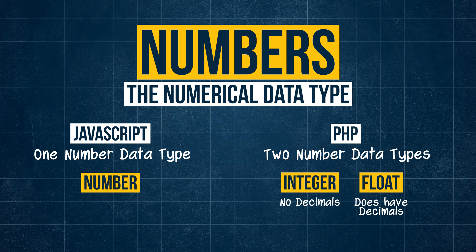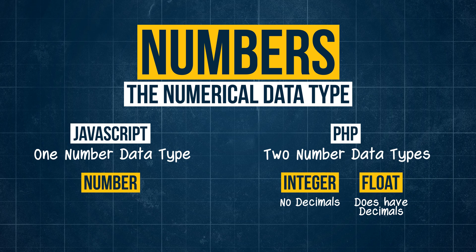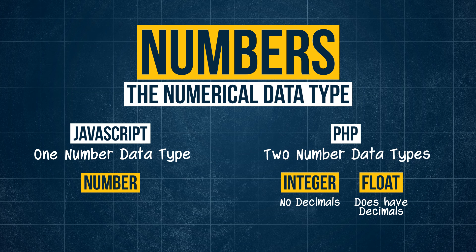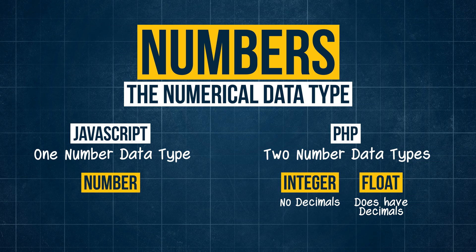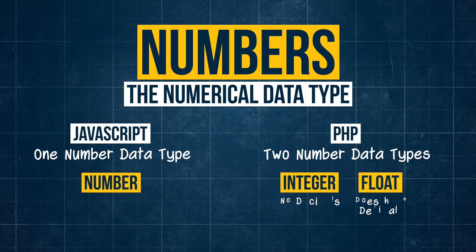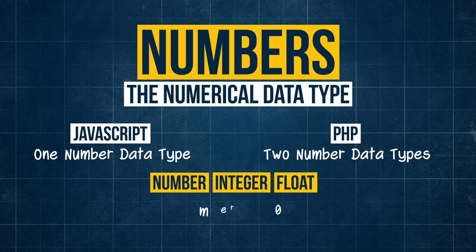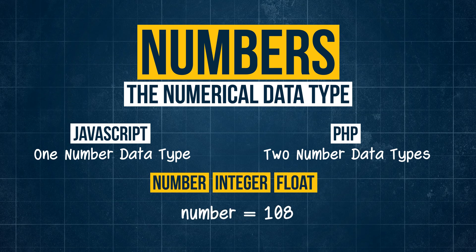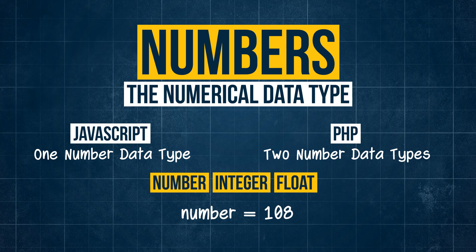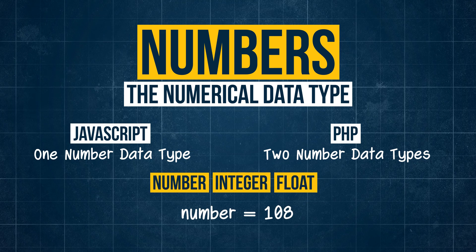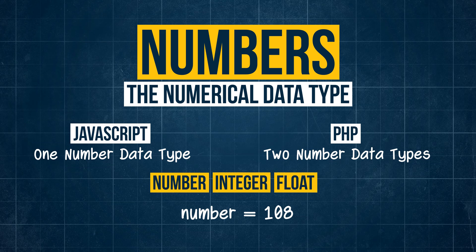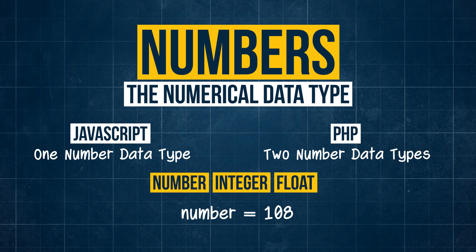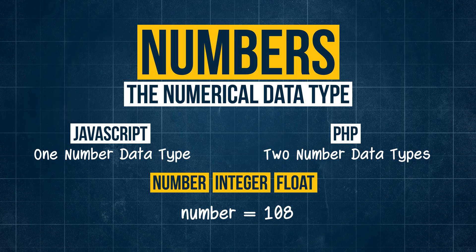There are other factors that come into play with data management of numbers, but that doesn't really concern us at this point. Both numbers in JavaScript and integers and floats in PHP are all defined by simply having the number appear after the equal sign.